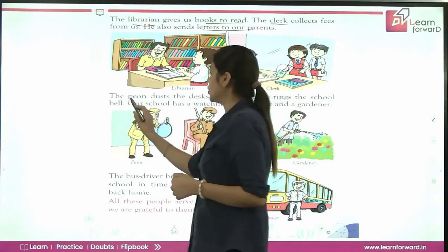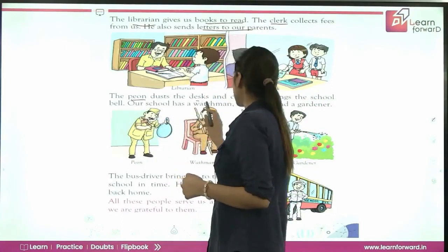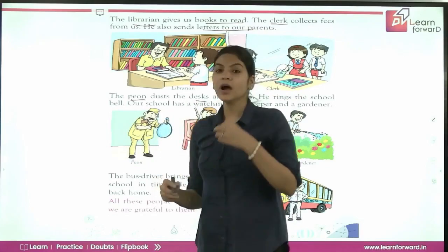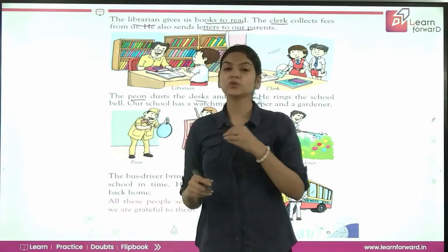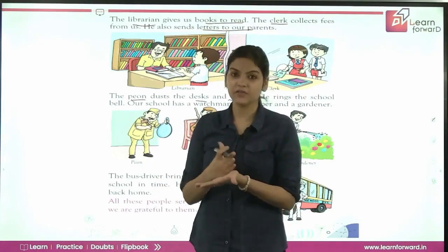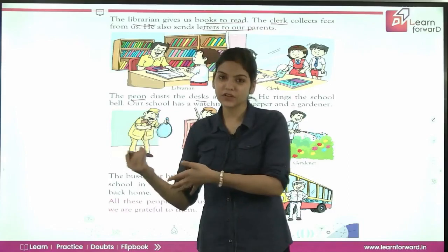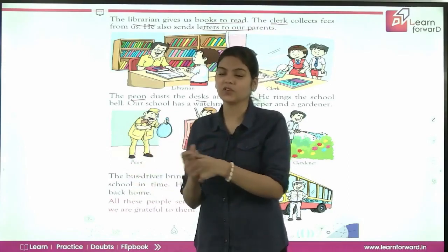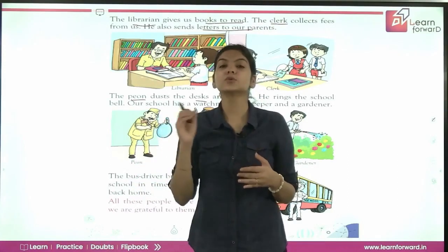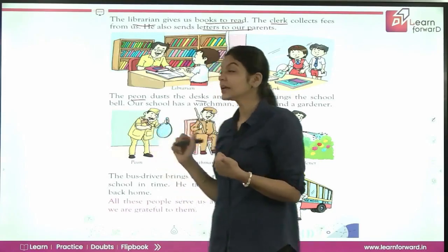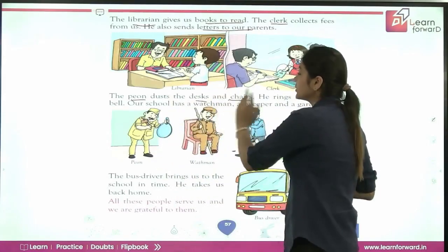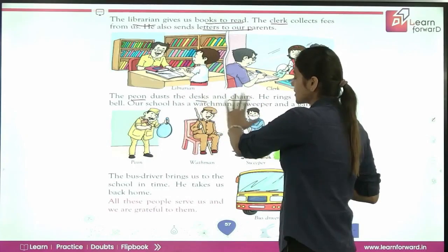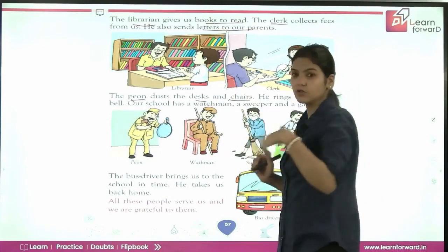Next is the peon. The peon does the dusting of the desks and chairs, and also rings the school bell. Every period has an interval — maybe after 35, 40, or 45 minutes — and it is the peon's job to ring that bell.